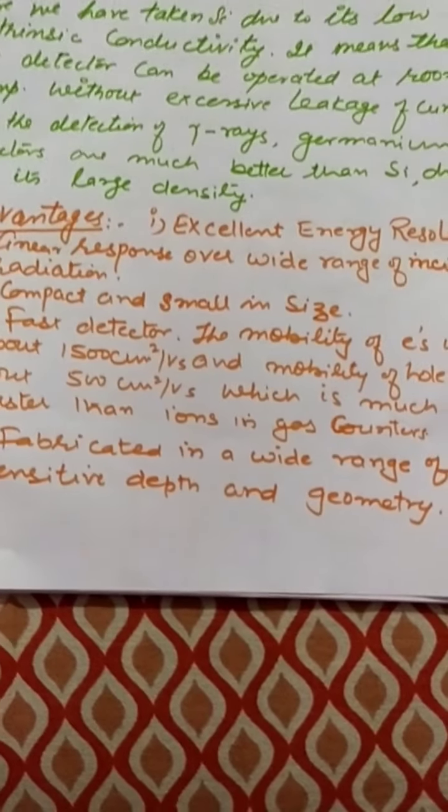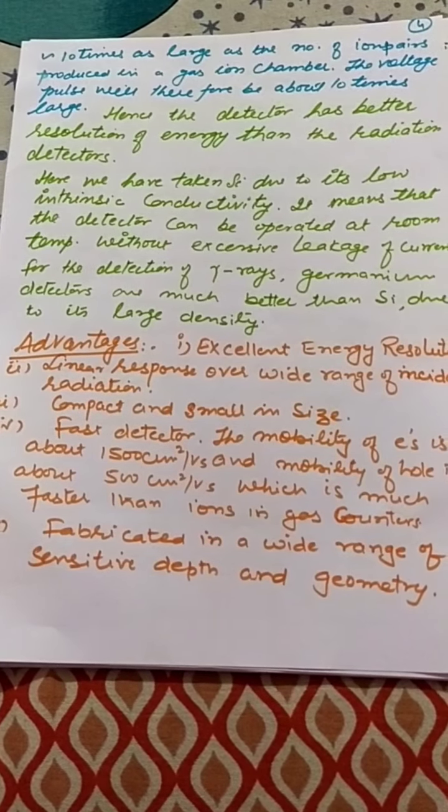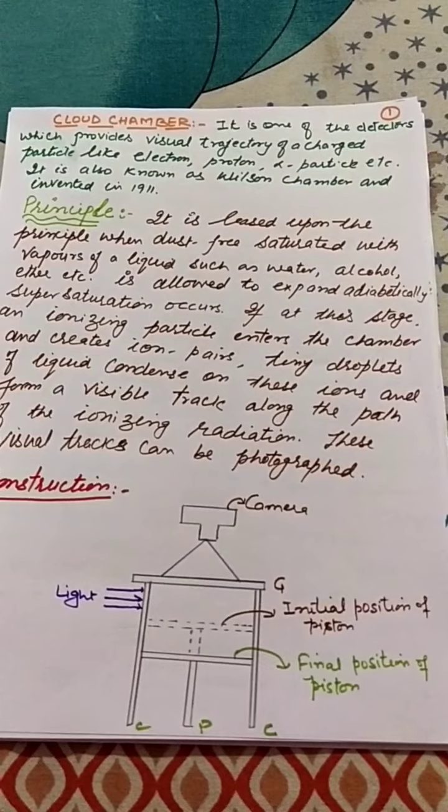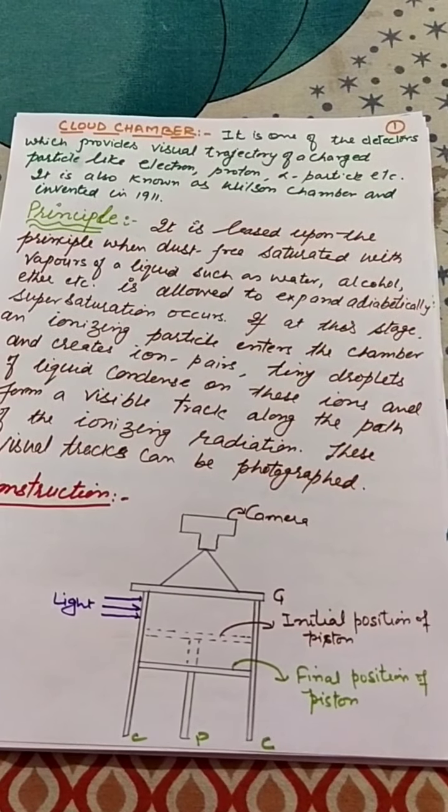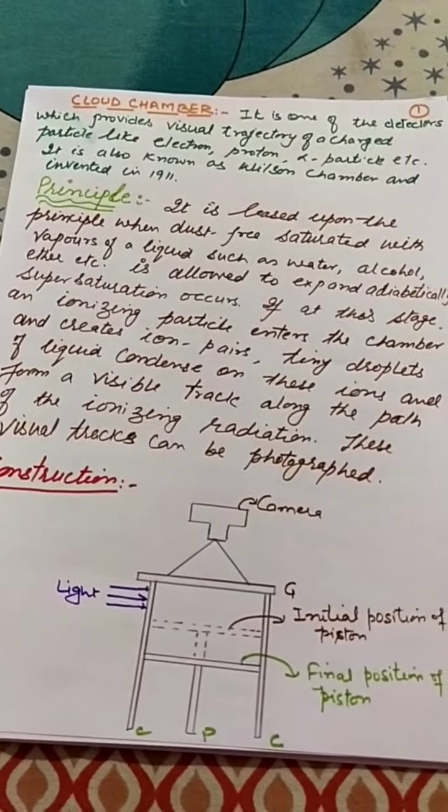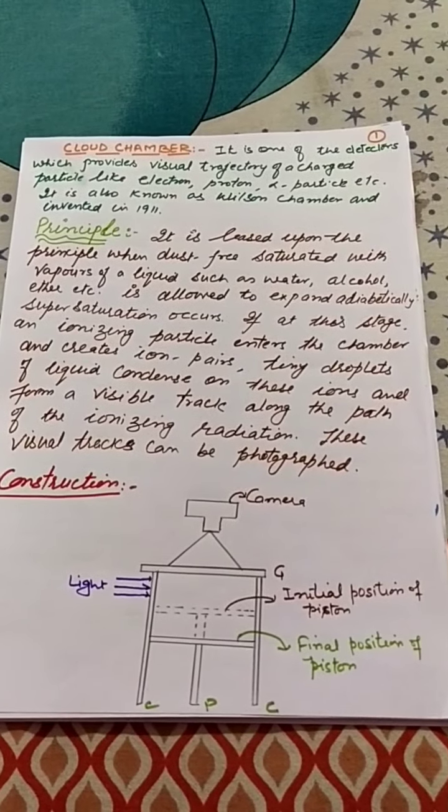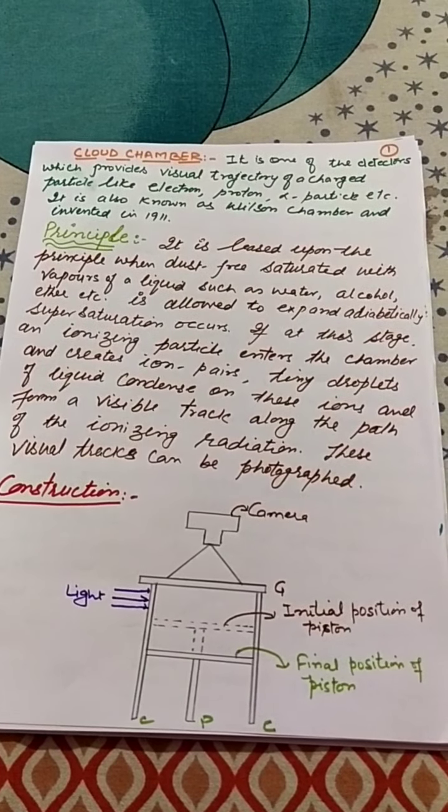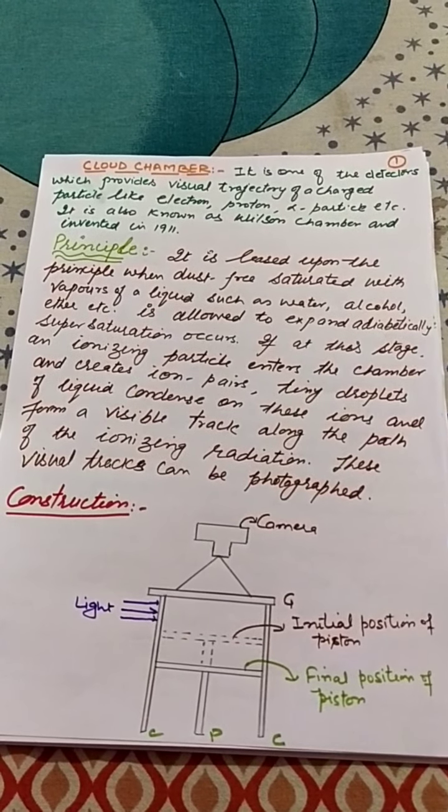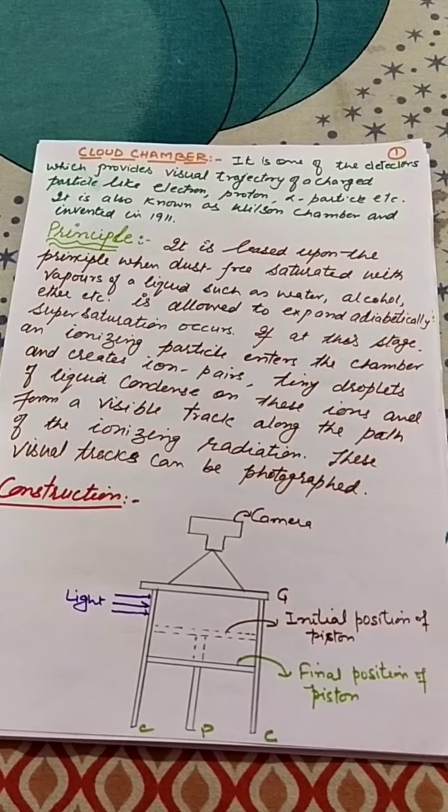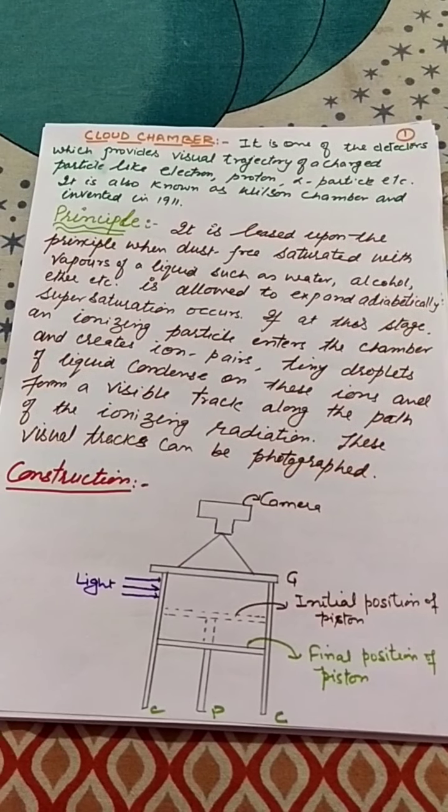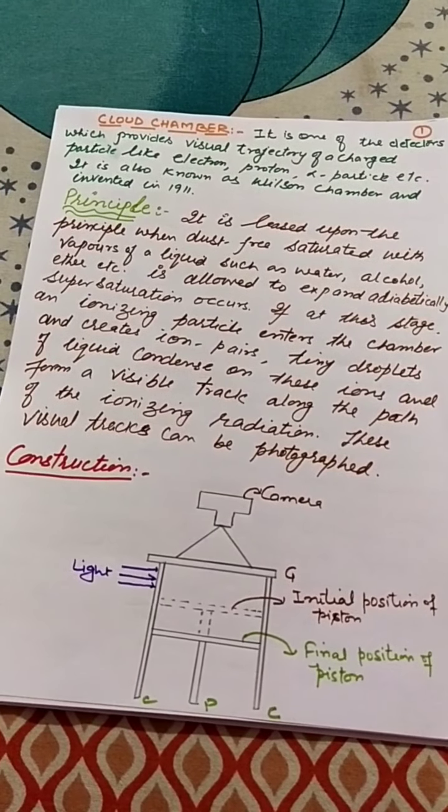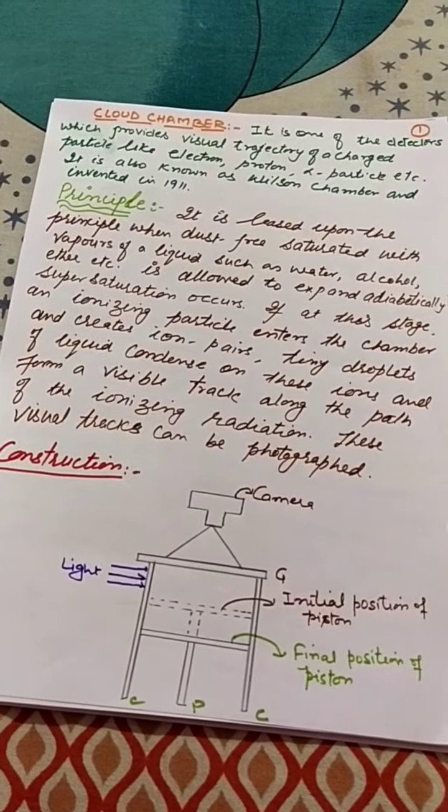Now switch over to the next topic: the cloud chamber. Cloud chamber is also known as Wilson's chamber, which was built by Wilson in 1911. It is one of the detectors which provides visual trajectory of charged particles such as electrons, protons, alpha particles, etc. The principle of this detector is based on the principle that when dust-free air saturated with vapors of liquid - water, alcohol, ether, and others - is allowed to expand adiabatically, super saturation occurs. Adiabatically means no heat is involved, no heat is absorbed.